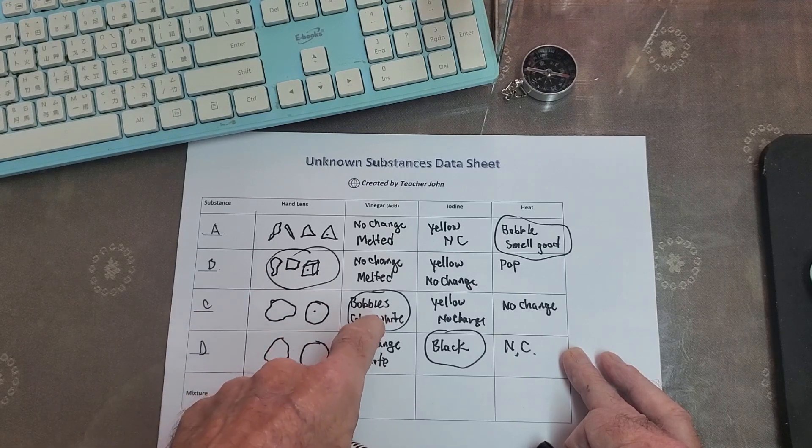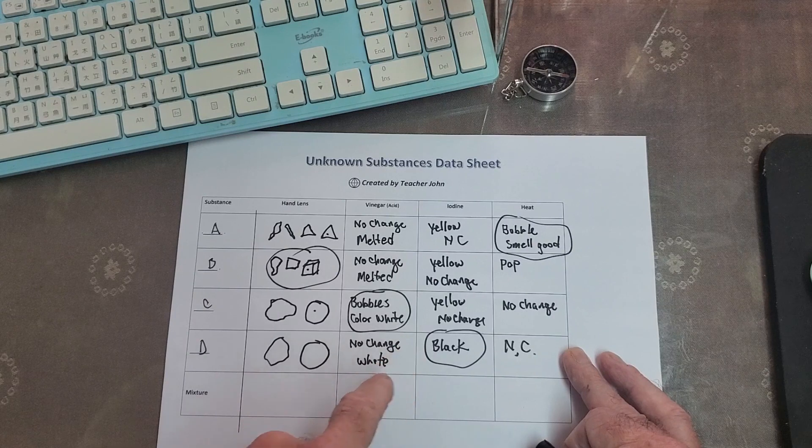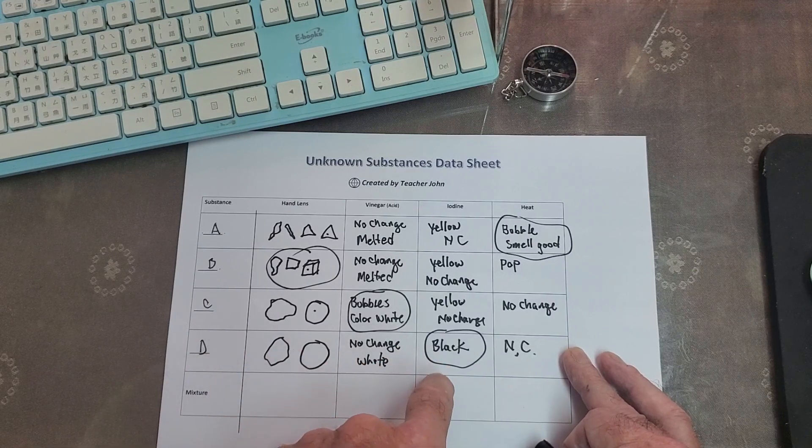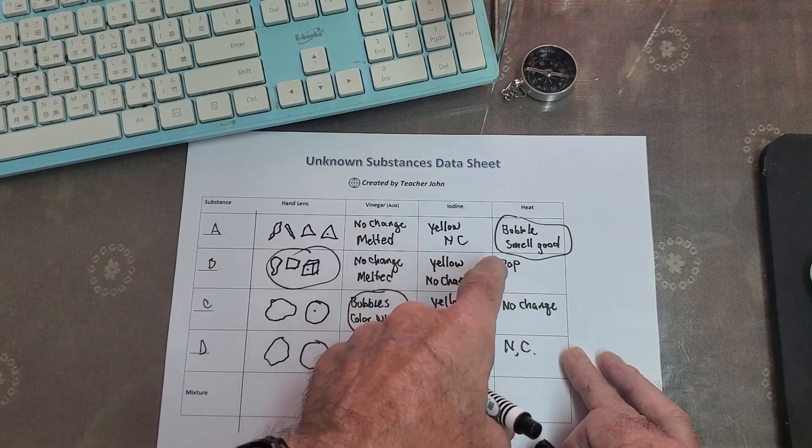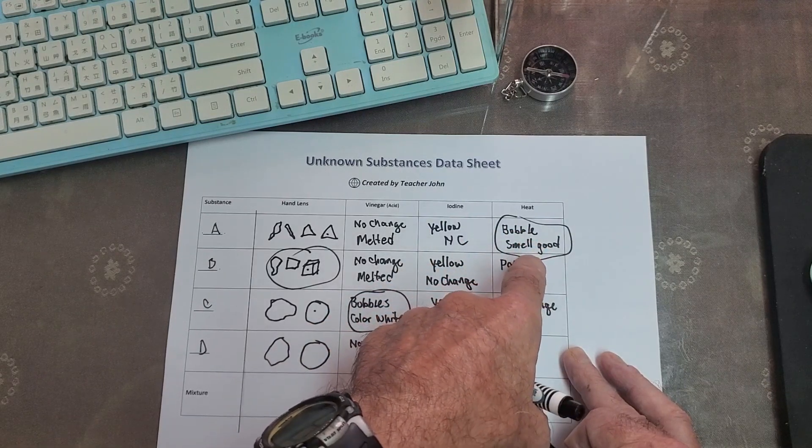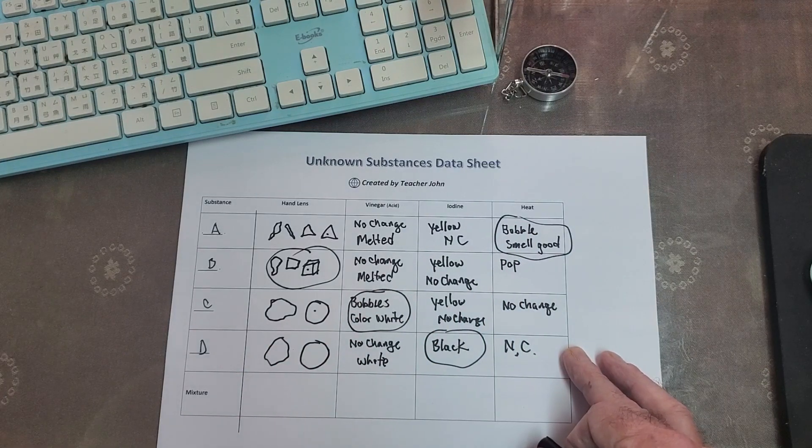So you can see B the shape is really key indicator. For C it bubbles with vinegar. For powder D it turns black with iodine. So each one has a characteristic. And A bubbles and smells good and tastes good too. But we don't taste.